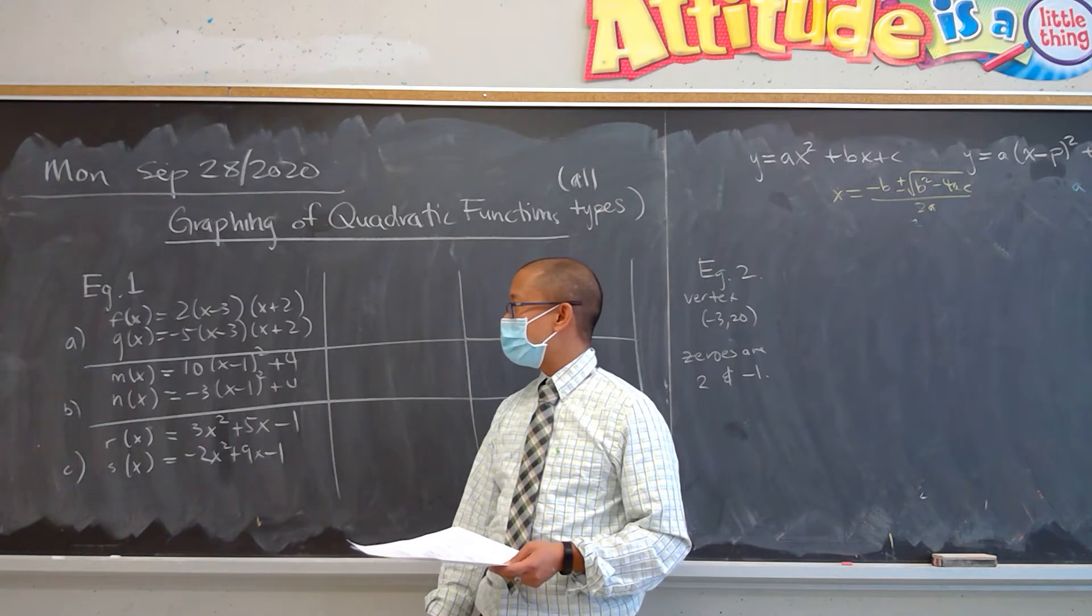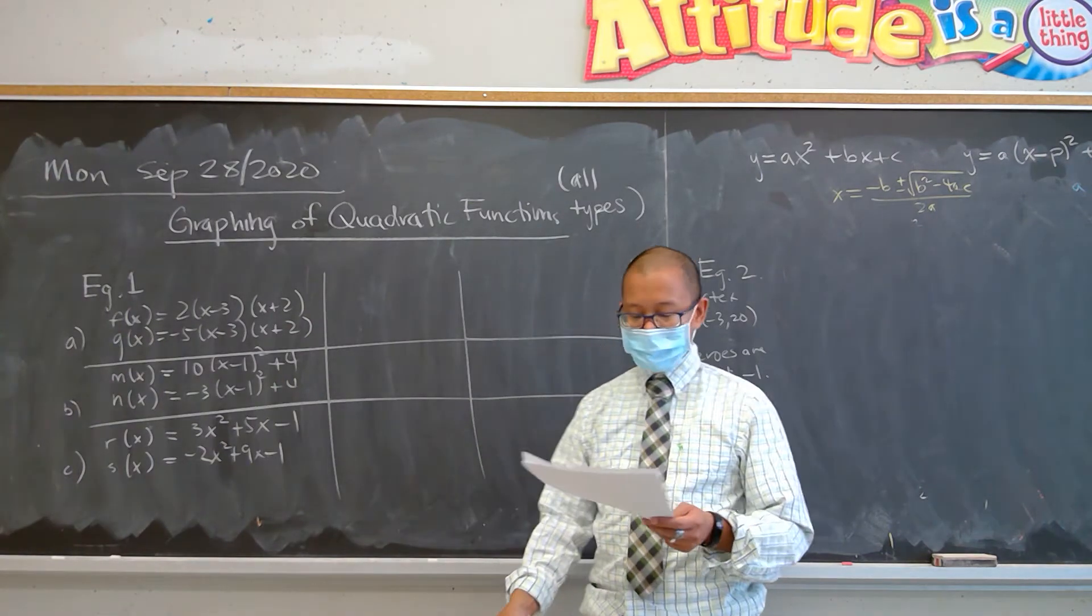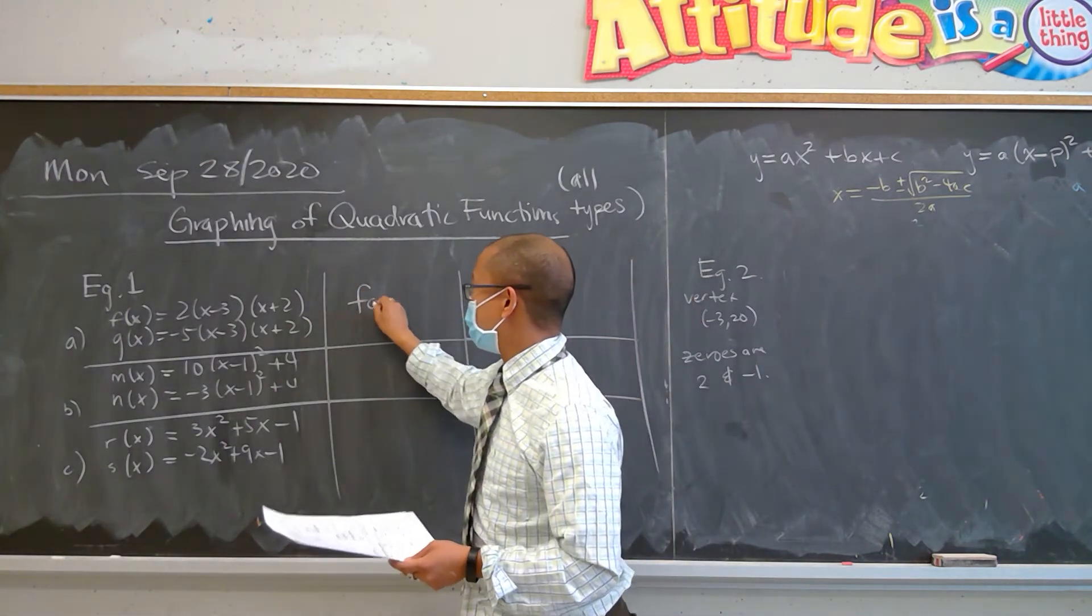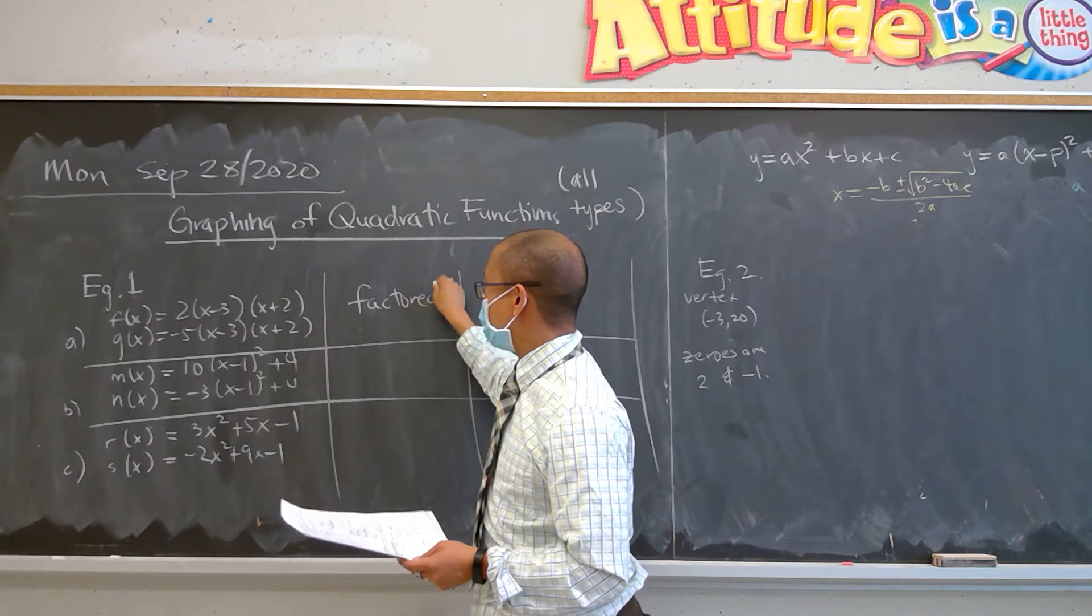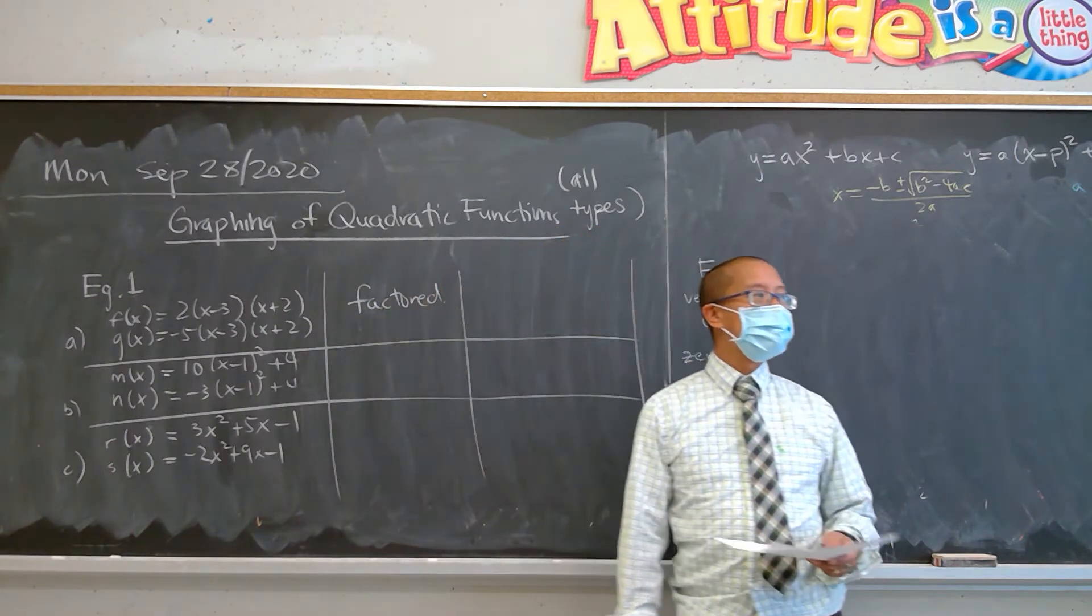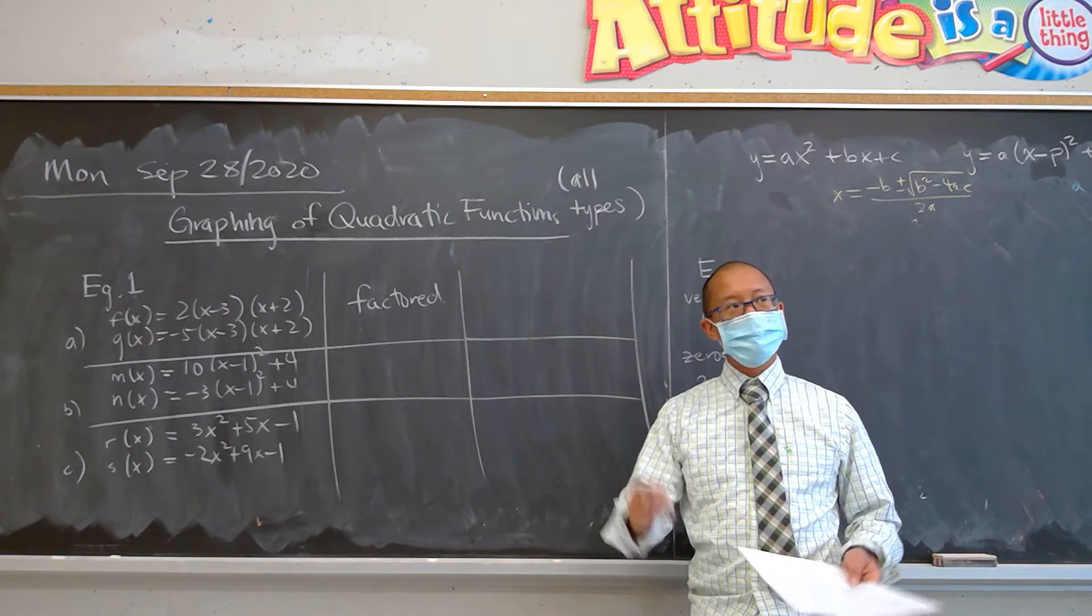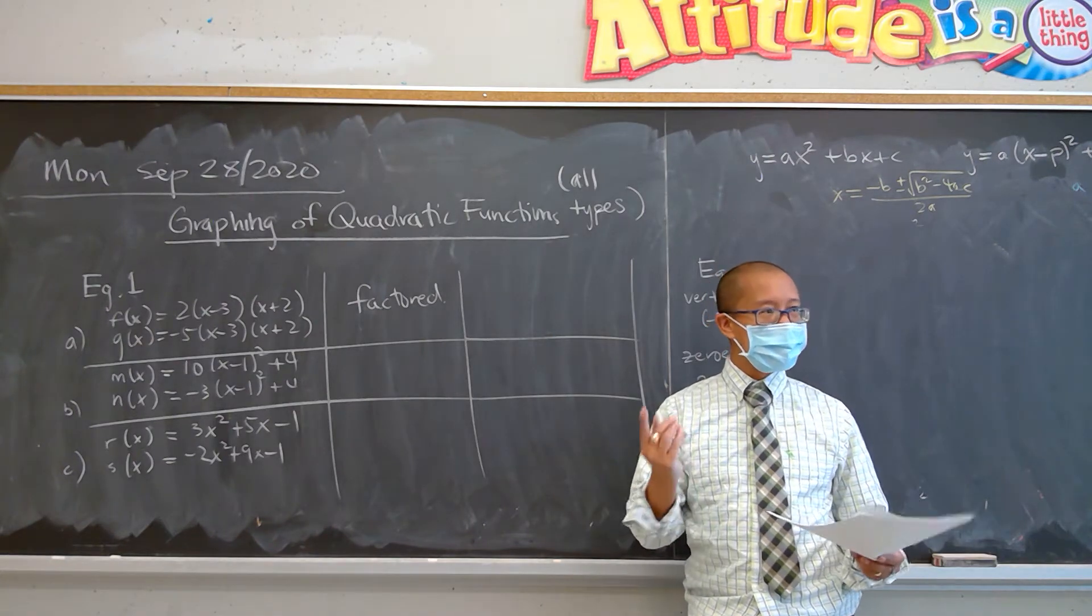g(x) is negative 5 times (x plus 2). A lot of you know the answer for this. The form for this is clearly factored form. It might not be so obvious.